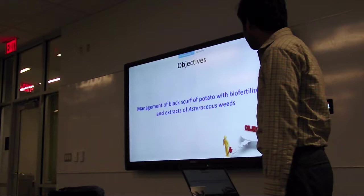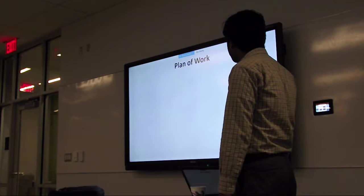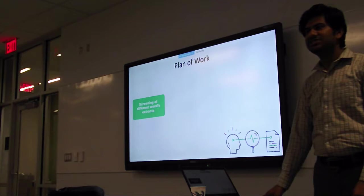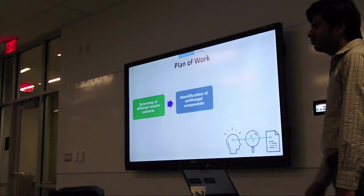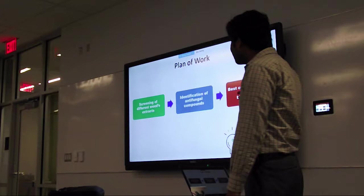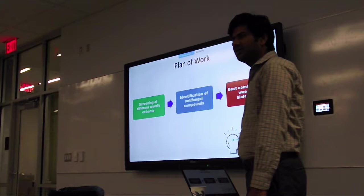Plan of work. I'm going to present my plan of work. First I have to screen out different weed extracts which are effective against the economically important disease, black scarf of potato. Second step is identification of antifungal compounds from those extracts. And the third step is best combination of weed and biofertilizers to manage the disease in an eco-friendly way, not using any chemical.